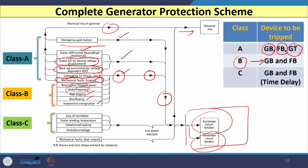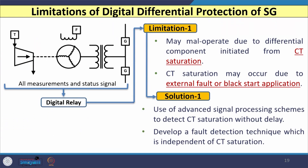Class C trip is initiated for conditions such as loss of excitation, stator winding temperature exceeding a limit, unbalanced loading, or under/over voltage situations. In this case, signals are given to the field breaker and generator breaker, but with some time delay.